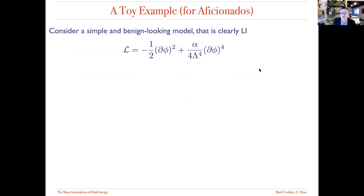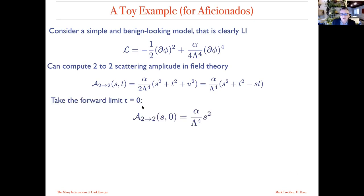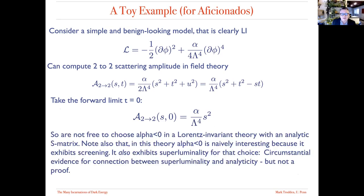Here's a toy example: a simple-looking theory with a well-behaved kinetic term for a scalar field, to which I've added just one additional interaction. The question is whether this theory satisfies the positivity bound on the forward scattering amplitude — which would be required for a healthy Lorentz-invariant UV completion.